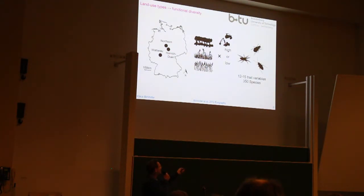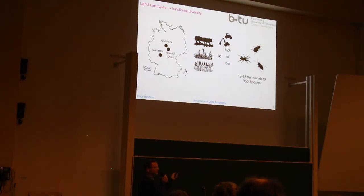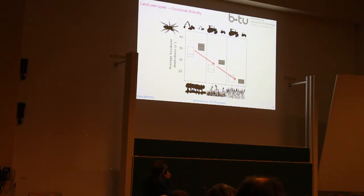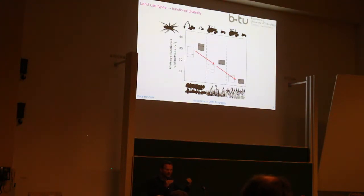For this I take you to central Germany — three study regions with data for ground beetle, spider, and true bug communities. In total 350 species, for which we coded 12 to 15 traits each. We had data from forest, grassland, and arable field systems — three land use types often converted into one another — and from high- and low-intensity managed sites within each land use class.